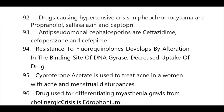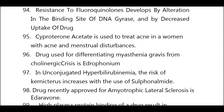Drugs causing hypertensive crisis in pheochromocytoma are propranolol, sulfasalazine, and captopril. Anti-pseudomonal cephalosporins are ceftazidime, cefoperazone, and cefepime. Resistance to fluoroquinolones develops by alteration in the binding site of DNA gyrase and by decreased uptake of the drug.